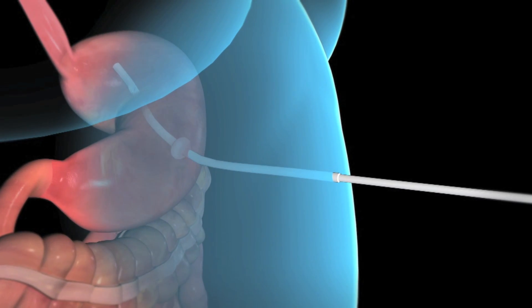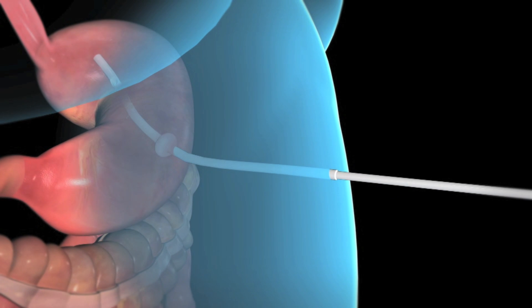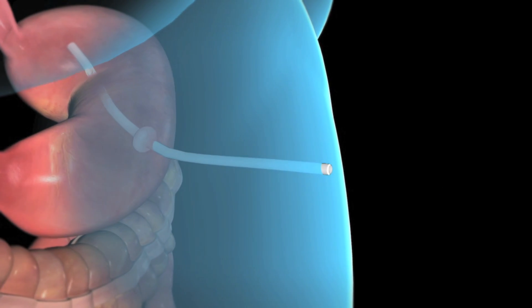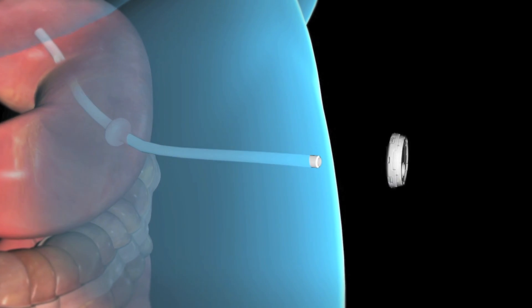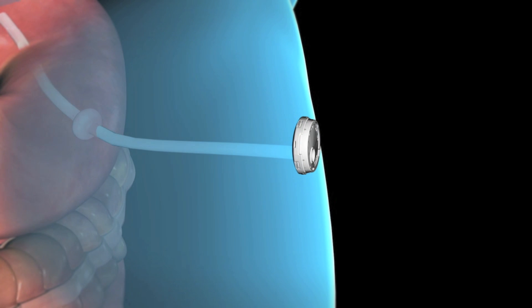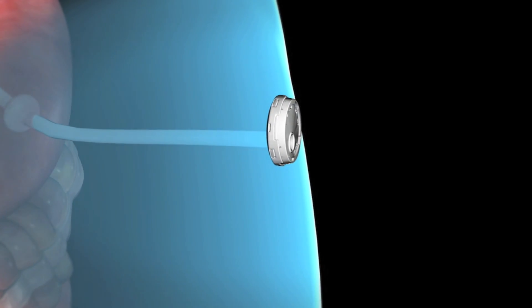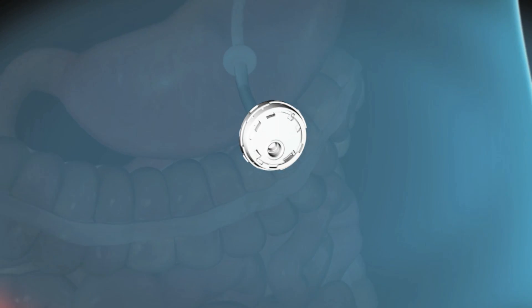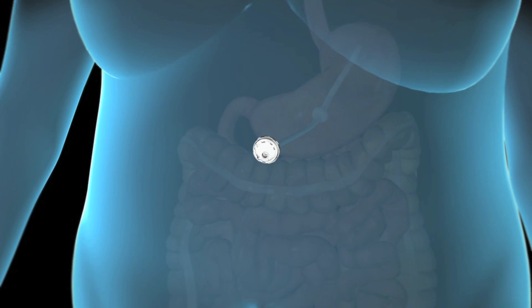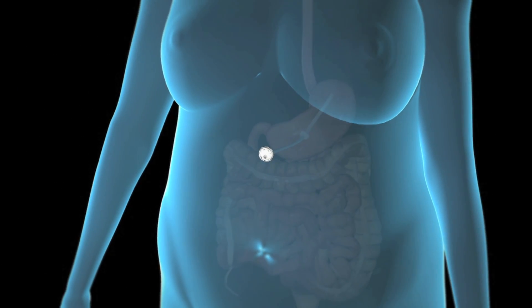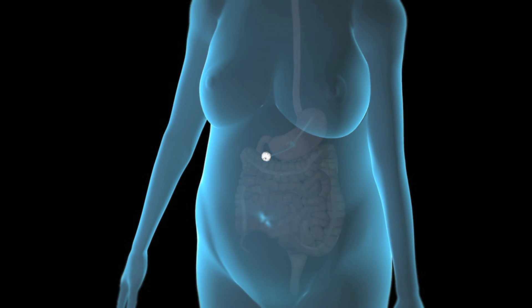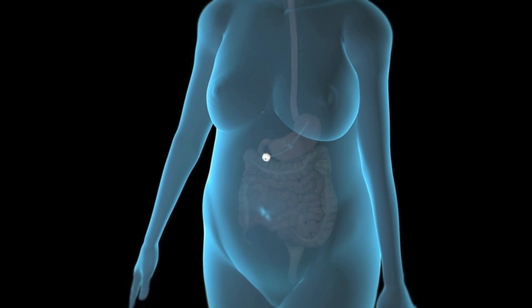Once your skin has healed around the A tube, the tube will be shortened to the surface of your abdomen. A small, thin skin port is attached to the end of the A tube and will sit nearly flush against your skin. The skin port serves as a valve to open and close the tube when you aspirate your stomach contents using the Aspire Assist Aspiration Therapy System.